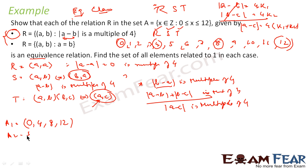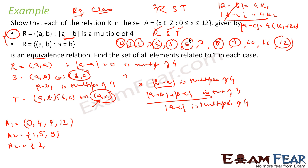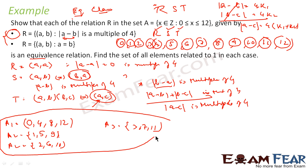Similarly, the next set: take 1 as one number. The next number is 5, because 5 minus 1 is 4. Then 9, because 9 minus 1 is 8. Then 13, but 13 is not in the set. So A2 is {1, 5, 9}. Then take 2: the next possible number is 6, because 2 minus 6 is minus 4, and then 10. So A3 is {2, 6, 10}. Then A4 will have 3, 7, and 11. So we broke set A into four parts: A1 plus A2 plus A3 plus A4, which are {0,4,8,12}, {1,5,9}, {2,6,10}, and {3,7,11}.